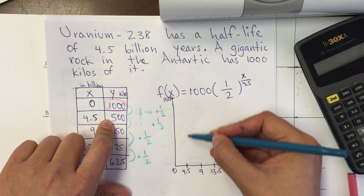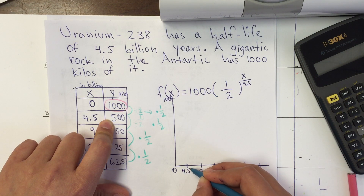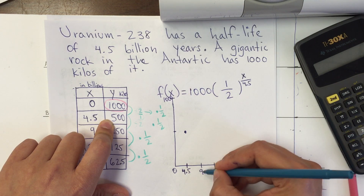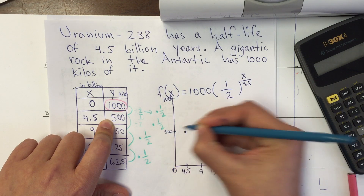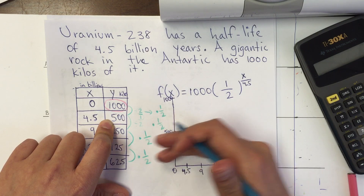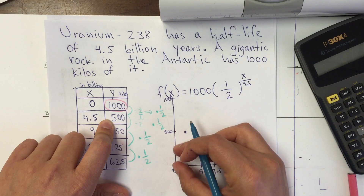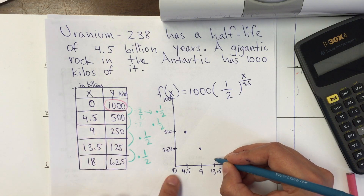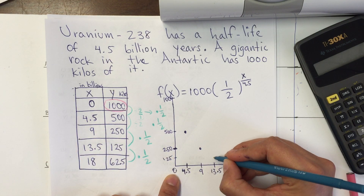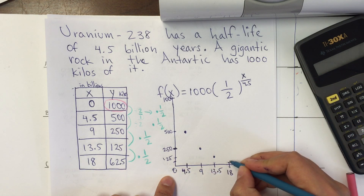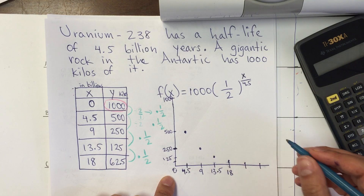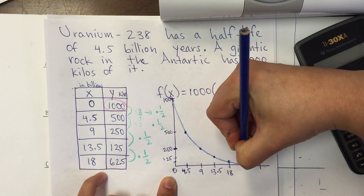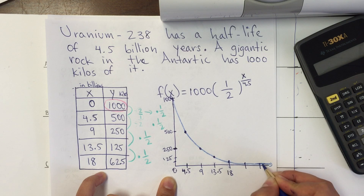After 4.5 billion years I don't have 1,000 anymore — I have half of that, which is 500. Another 4.5 billion years goes by and I have half of 500, which is 250, at x = 9. Then half of that is 125 at 13.5, and then 62.5, and so on, halving each time.